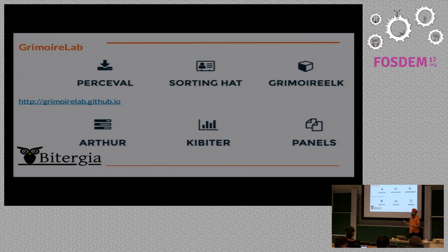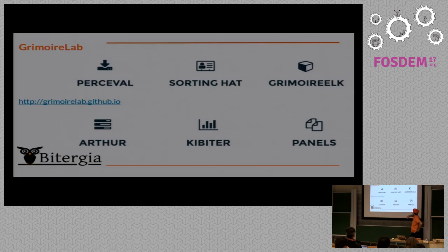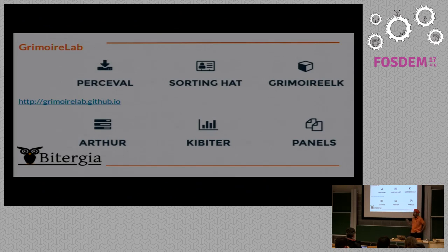SortingHat uses heuristics and can also be fed with manual information, such as GDAP files or other files that include affiliation data. Grimoire Elk enriches the information and produces the Kibana indexes. Arthur is designed to orchestrate everything and handle thousands of repositories simultaneously — if you're only dealing with tens of repositories you probably don't need Arthur. Kibitor is the fork of Kibana, and Panels is the configuration for Kibitor containing the list of visualizations for the dashboard.